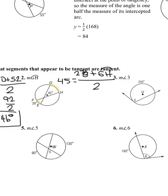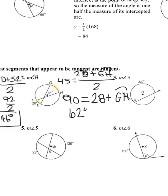We want to get arc GH by itself. To get rid of the divide by two, we multiply by two on both sides, so we get 90 equals 28 plus arc GH. We subtract 28 from both sides and we're left with 62 degrees — that's arc GH.